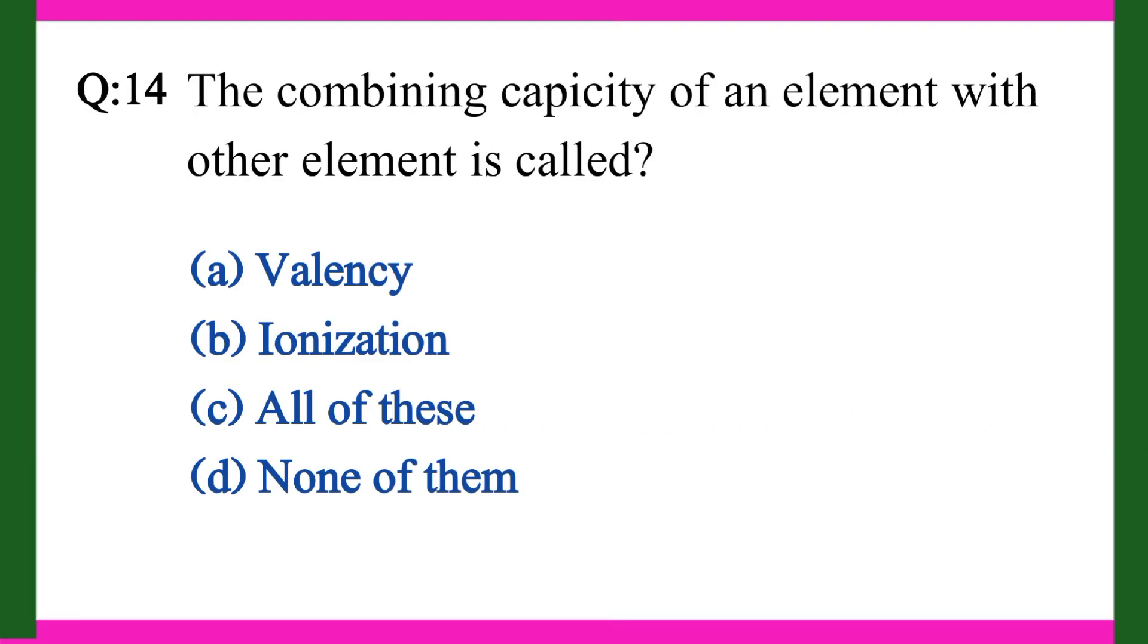Question fourteen: The combining capacity of an element with other element is called. A. Valency, B. Ionization, C. All of these, D. None of them. Right answer is A. Valency.